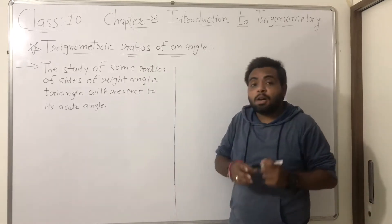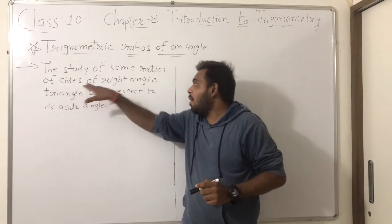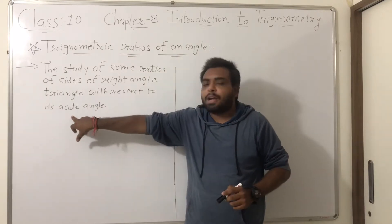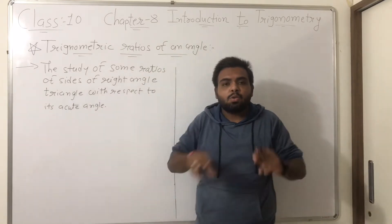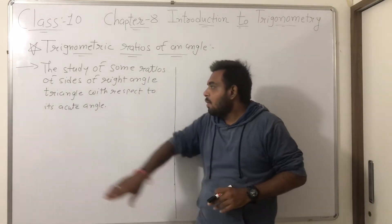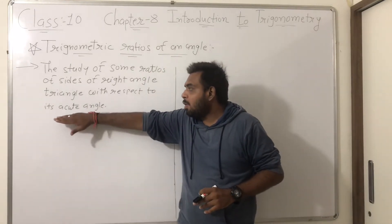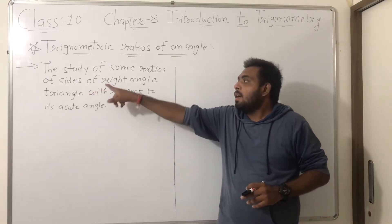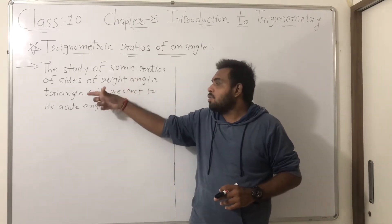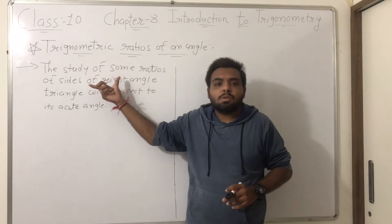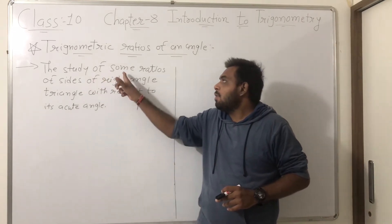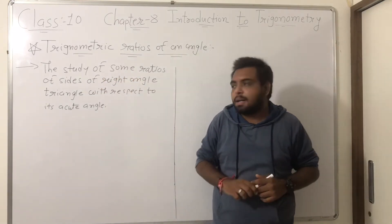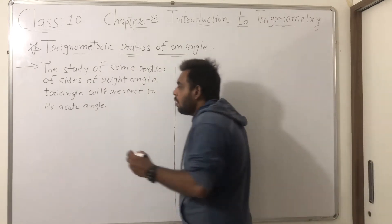The study of some ratios of sides of a right angle triangle with respect to its acute angle. So for example, let us consider a right angle triangle.